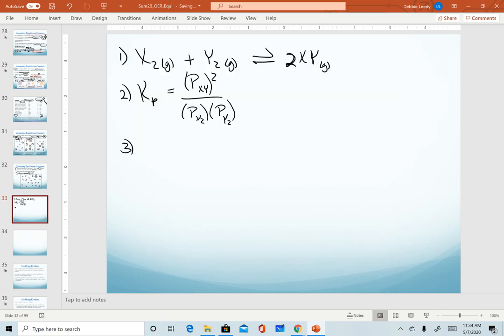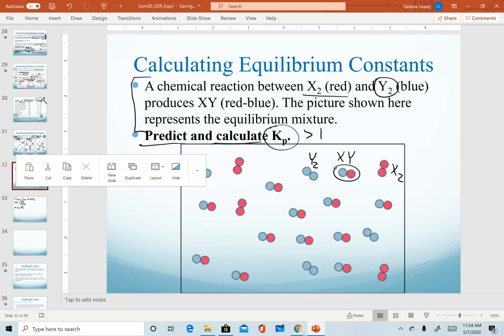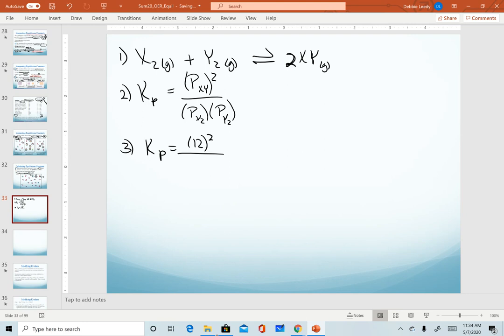So for my products, I have 12, and of course that gets squared. For my reactants, for x2, which is my red, I have 4. For my y2, I have 4 there as well.